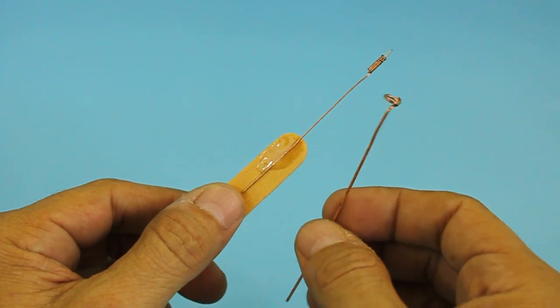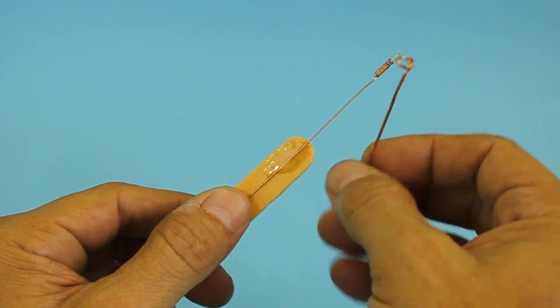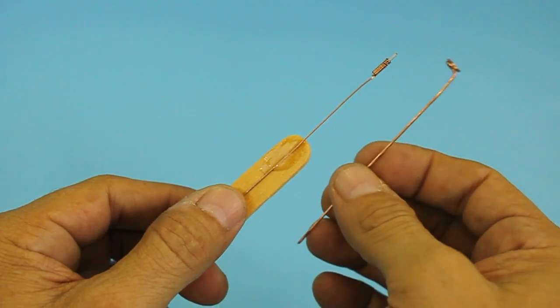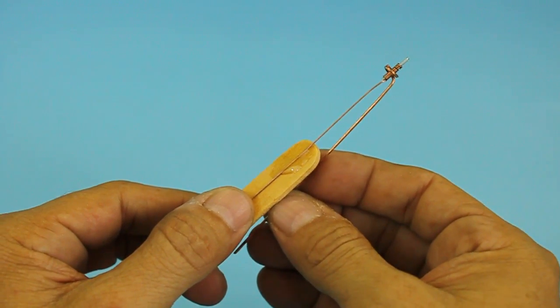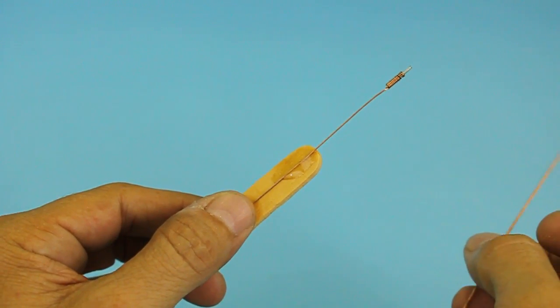We also have this other piece of copper wire. It is thicker and one end is in the form of a ring. This piece goes like this without touching the first piece of wire.